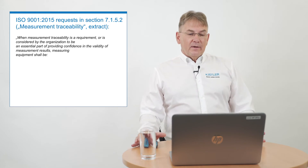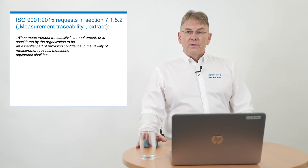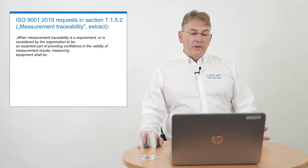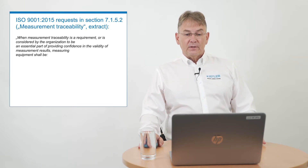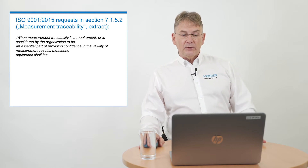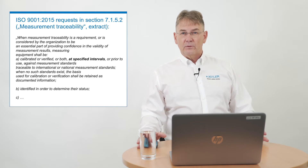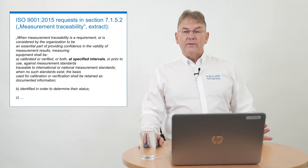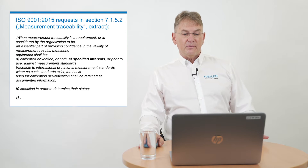The first thing we always do is take a look at norms. For most of you, ISO 9000:2015 is the mother of all norms, and this norm requests in section 7.1.5.2: when measurement traceability is a requirement or is considered by the organization to be an essential part of providing confidence in the validity of measurement results — which means nothing more than good quality of your product — measuring equipment shall be calibrated or verified or both at specified intervals, against measurement standards traceable to international standards. So we know calibration is mandatory and intervals have to be given, but it doesn't really help for everyday use.